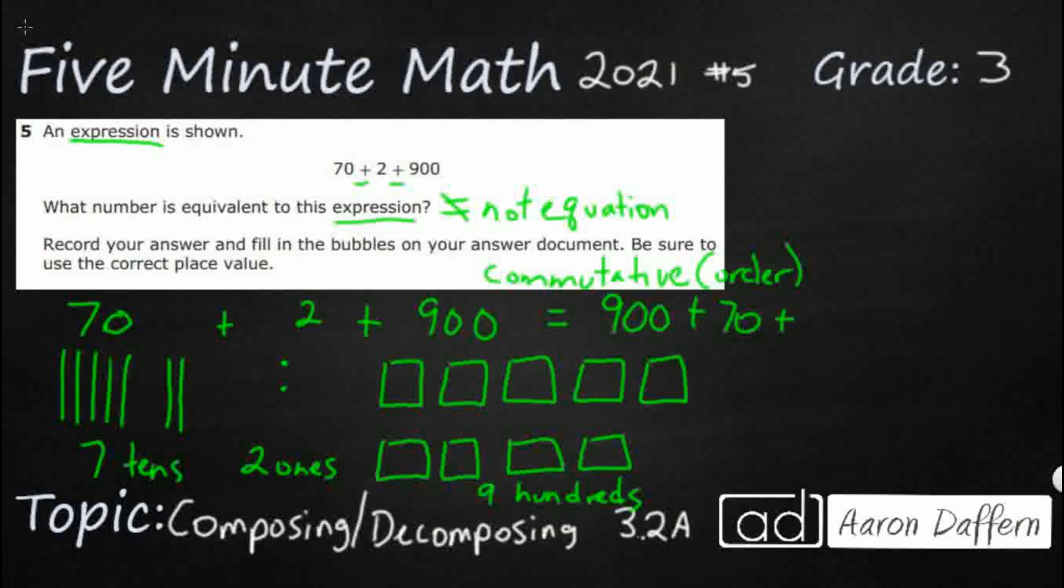It doesn't work with subtraction. It doesn't work with division. 900 plus 70 plus 2. That makes a little bit more sense. That's an expanded form that I can look at.